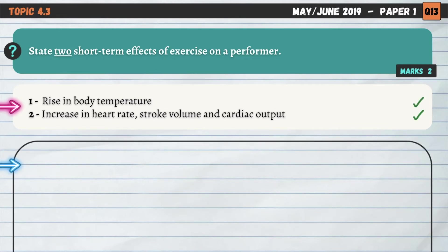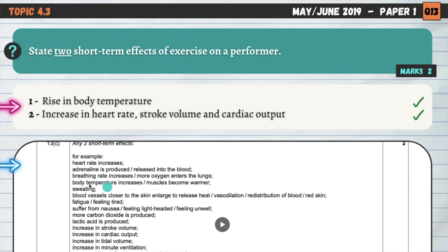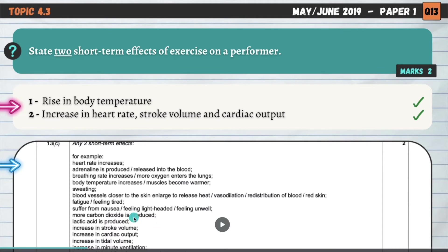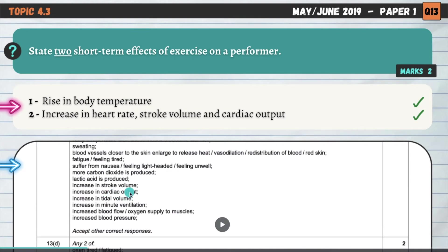Let's look at our options. Heart rate increases for one mark. Adrenaline is produced and released into the blood — that's one of the things that causes heart rate to increase during exercise. Breathing rate increases as well. Body temperature goes up. We sweat. Blood vessels closer to the skin become enlarged to release heat, causing the skin to turn red. We feel tired or fatigued. We might suffer from nausea. More carbon dioxide is produced. Lactic acid is produced. This question is actually worth three marks.